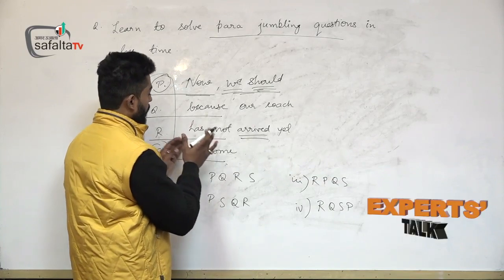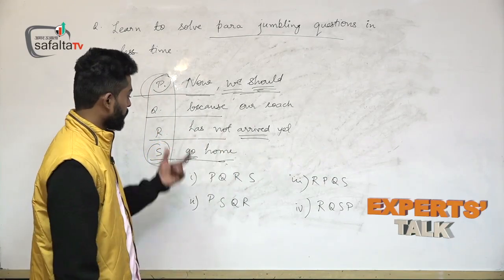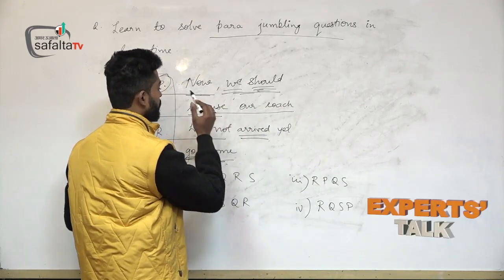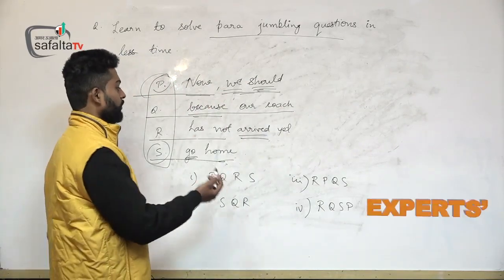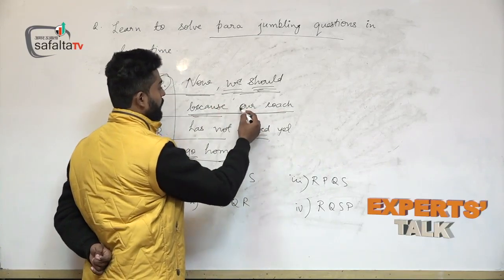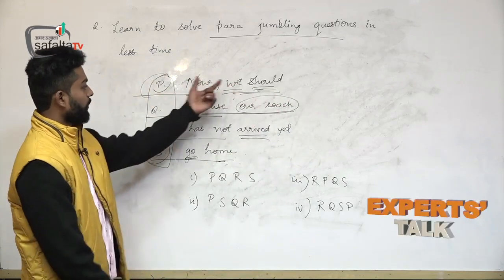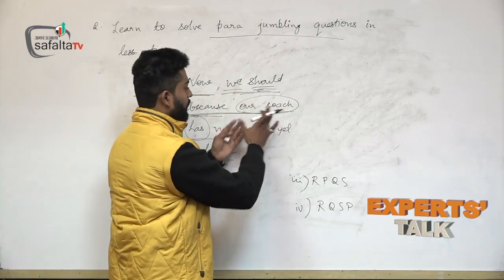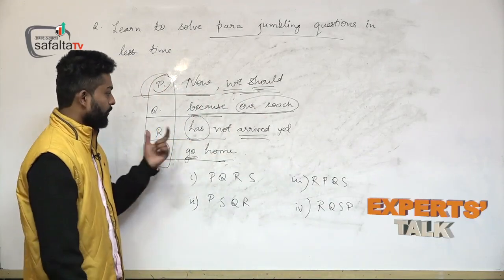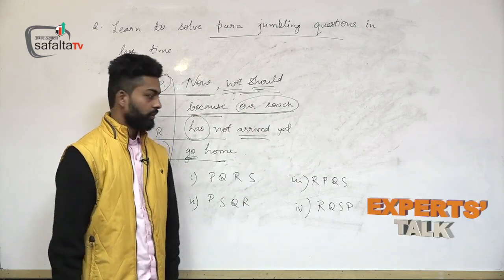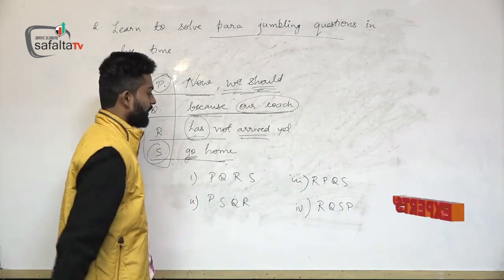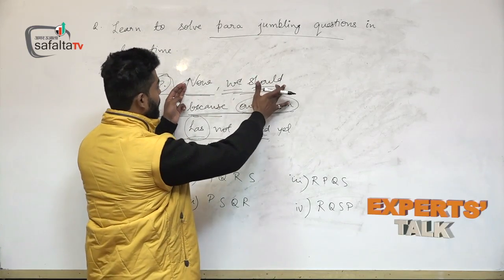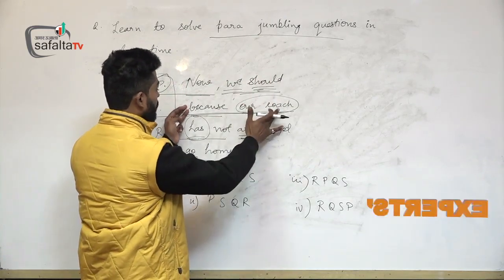After that, 'because' is used — if we are going to do this action, why are they doing this? Why do they want to go home? The reason is 'because our coach' — they are mentioning the reason why they are going home. 'Our coach' is another subject, and after it there is the helping verb 'has.' When looking for a subject, quickly search for any helping verb or verb that should follow. After 'our coach' comes 'has' and then 'arrived.' So the sentence becomes: 'now we should go home because our coach has not arrived yet.'